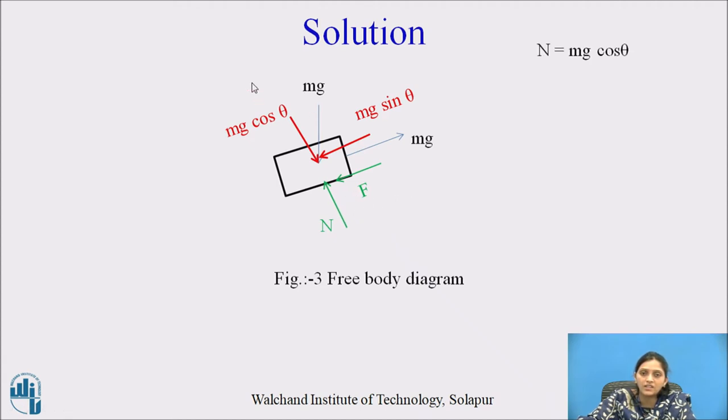Normal offered by the support and the frictional force acts opposite to the motion as shown in the figure. Two forces are in the perpendicular y direction: Mg cos theta and N, so N equals Mg cos theta.